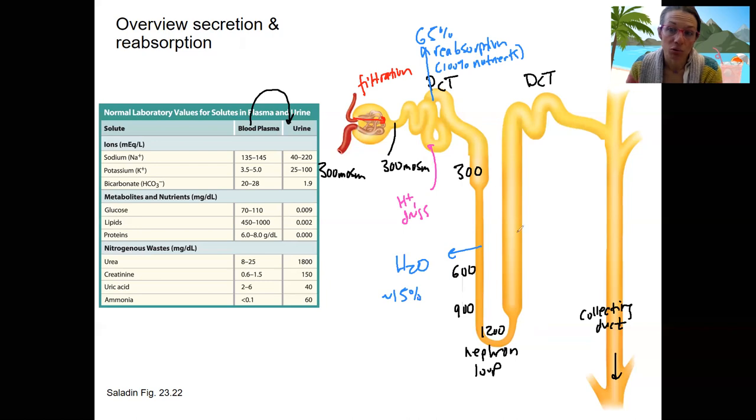As we re-ascend up the ascending nephron loop, we are going to have reabsorption of electrolytes. So this is where sodium, chloride, potassium are going to be reabsorbed. And because of this, we are diluting, we're removing the solids, right? So we're going to reduce osmolarity again.